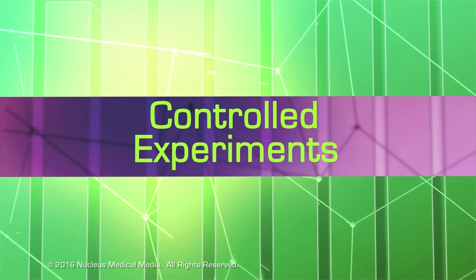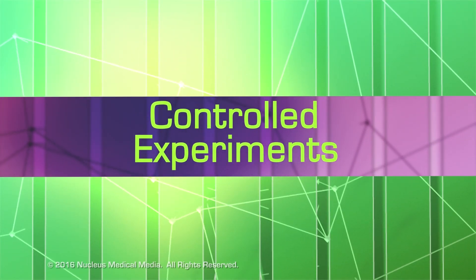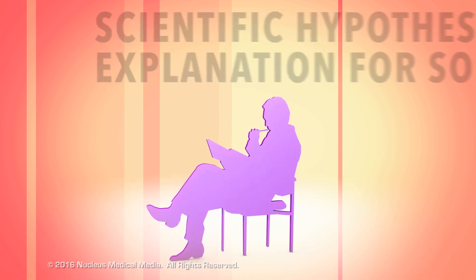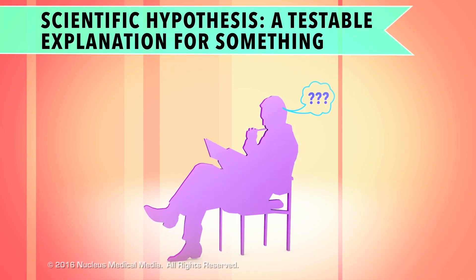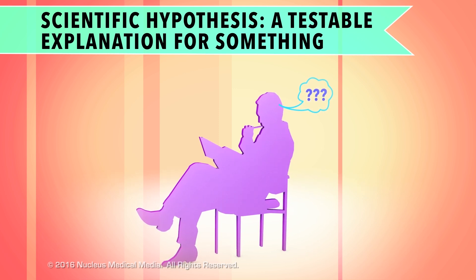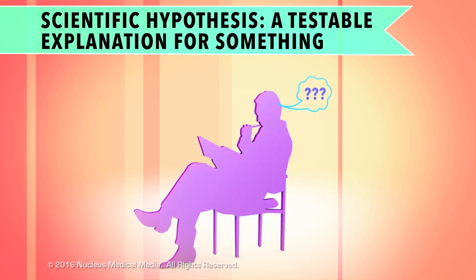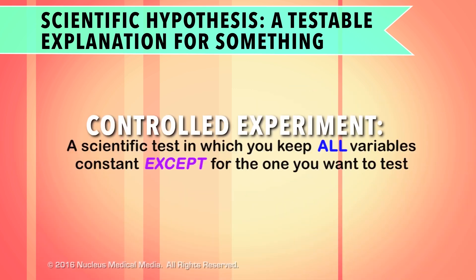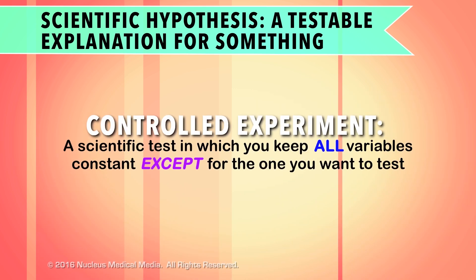What is a controlled experiment and why would you want to do one? Maybe you have an idea that you think might explain a situation. This is called a scientific hypothesis. How could you find out if your hypothesis is correct? Well, you'd set up a controlled experiment in which you control or keep constant all the factors, known as variables, except for the one you want to test.